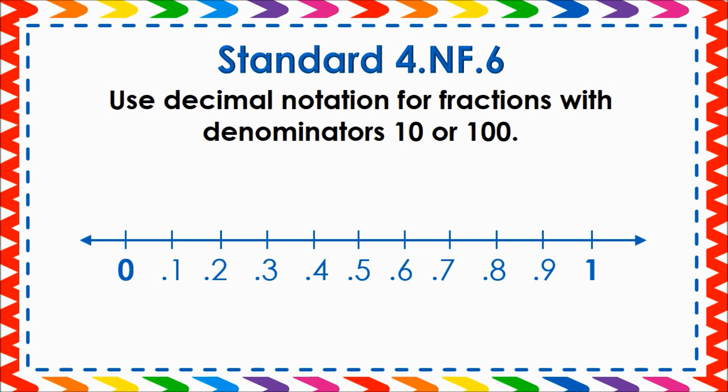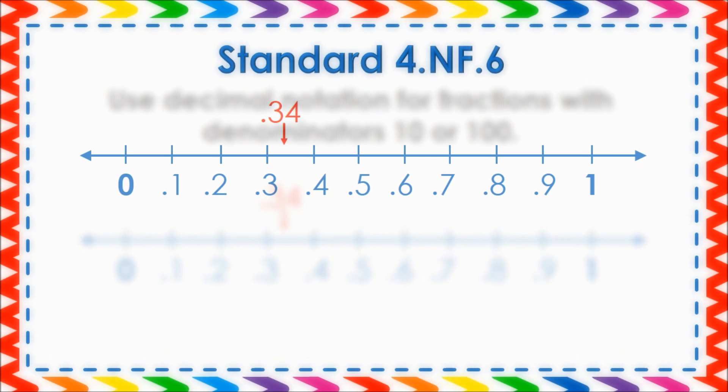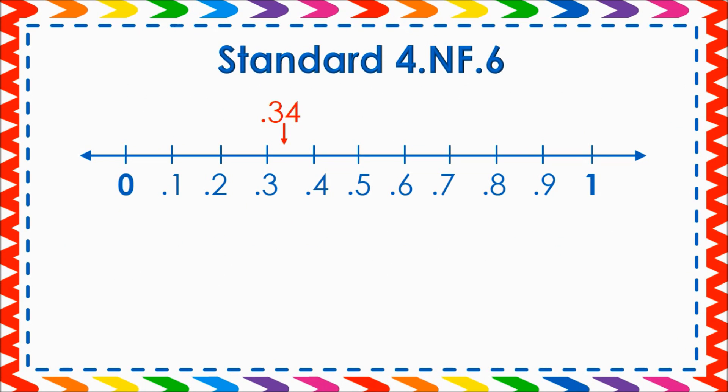Something else we learned with fractions is that between any two fractions on the number line, there are more fractions. This works the same way with decimals. For example, between three-tenths and four-tenths, there are other numbers — here is thirty-four hundredths, which is a little more than three-tenths and a little less than four-tenths. Because number lines can be abstract for some students, be sure to make connections between the number line and visual models. You can even hang the visual models below their corresponding decimal on the number line as a permanent reminder.